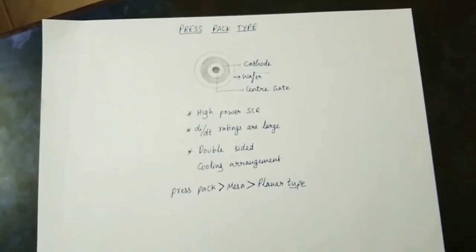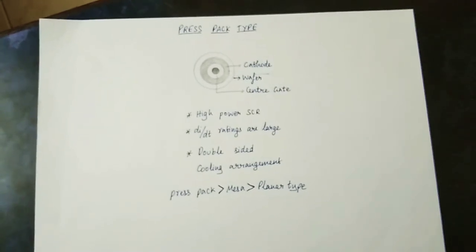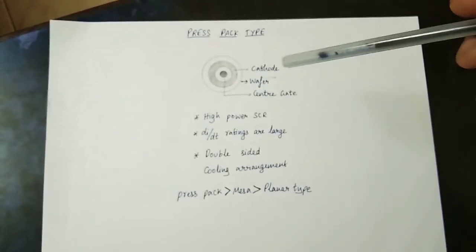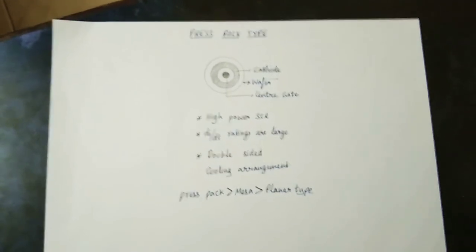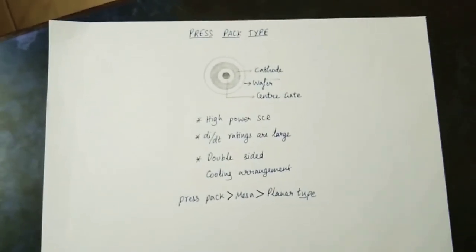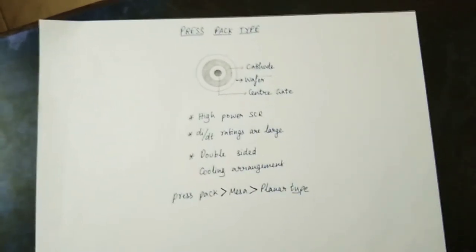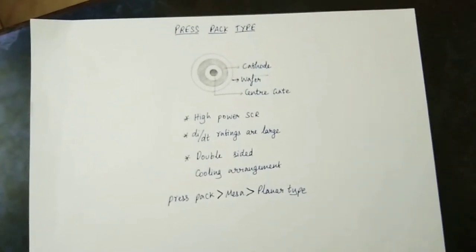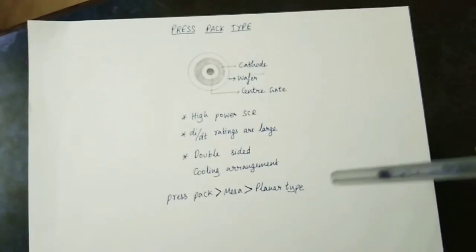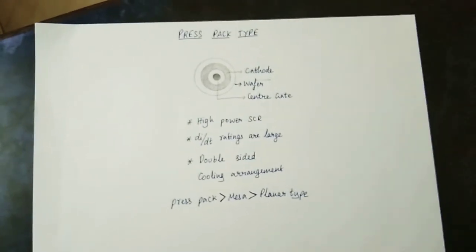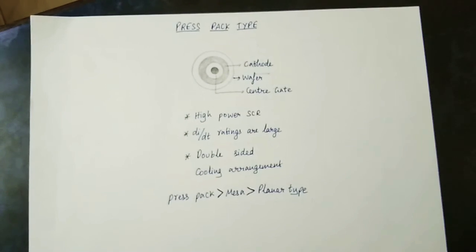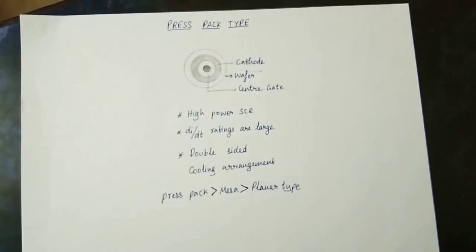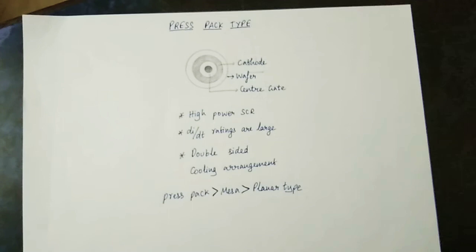The third type is the Press Pack Type. There is a wafer that works in the center, with a gate, cathode, wafer, and a cooling arrangement. The cooling arrangement is controlled by temperature. This type has high power ratings and is a very dominant and priority type. The most dominant SCR type is the press pack type.